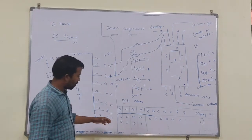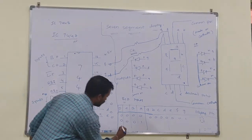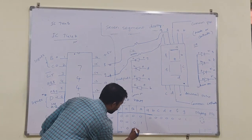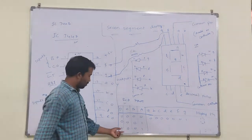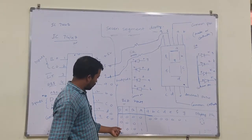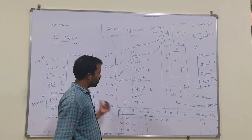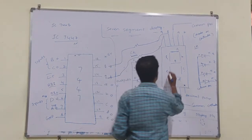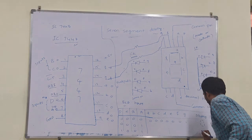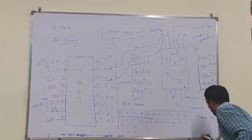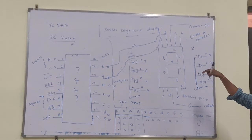By varying the inputs up to 1001, the equivalent decimal is nine. So if you give the input 1001, then nine is displayed on the seven segment display.